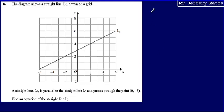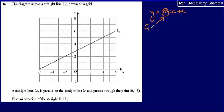The first thing we're going to talk about here is a general form for a straight line equation, which is y equals mx plus c, where m is the gradient, and the part c is the y-intercept.